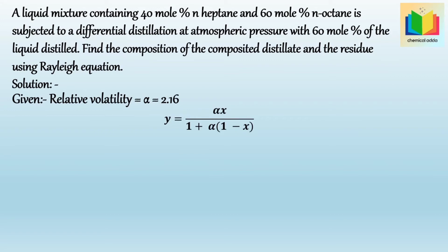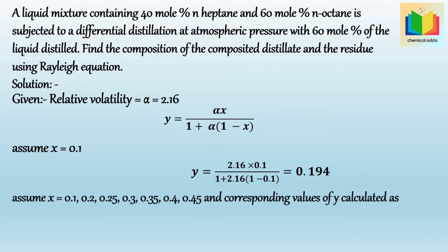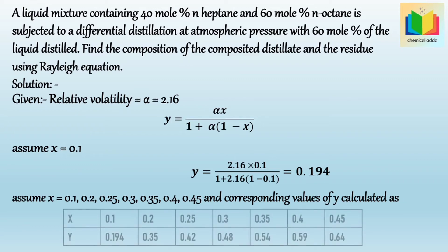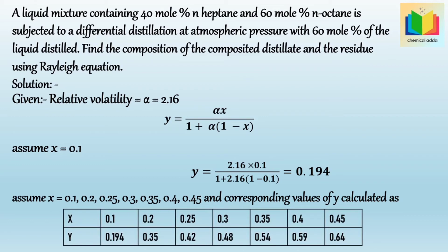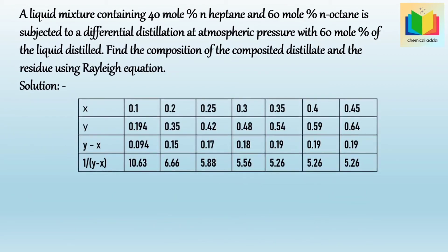To generate equilibrium data, assume values of X from 0.1 to 0.45 and calculate corresponding Y values. For example, when X = 0.1: Y = (2.16 × 0.1) / (1 + 2.16 × (1 - 0.1)) = 0.194. Similarly, values are computed for X = 0.2, 0.25, up to 0.45, since X_F = 0.4. From this table, values of 1/(Y - X) are calculated for each corresponding X value.